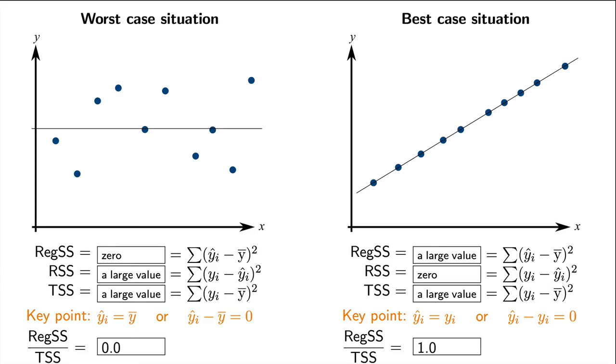For the worst-case situation, it will be zero, because the numerator is zero. For the best-case situation, it will be one, because both numerator and denominator are the same values.